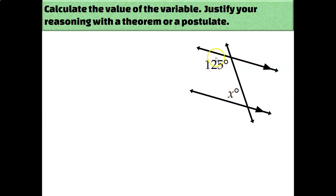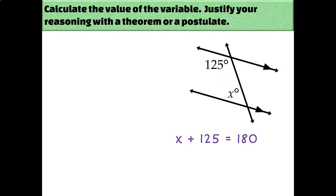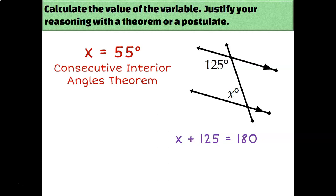On our next diagram, our two labeled angles are both on the left-hand side of the transversal, which makes them consecutive. They're in between the two parallel lines, which makes them interior. Consecutive interior angles are supplementary, so I can write x plus 125 equals 180 degrees, because supplementary angles always add up to 180. I get an answer of 55 degrees for x, because of the consecutive interior angles theorem.